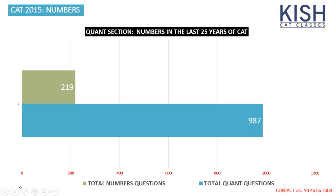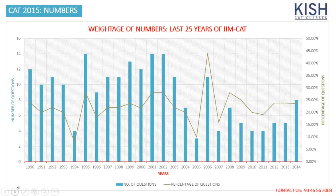Let's see whether these questions are spread evenly across the 25 years, or whether some years have a huge number of Numbers questions and some have very few. Looking at the graph, the percentage of Numbers questions is almost always between 20 and 25 percent. Even though the number of questions back in 1995 or 2001-2002 seems very high — like a weightage of 14 — and the number of questions in 2010 and 2011 are limited to 4, the weightage is still almost 20 to 25 percent.